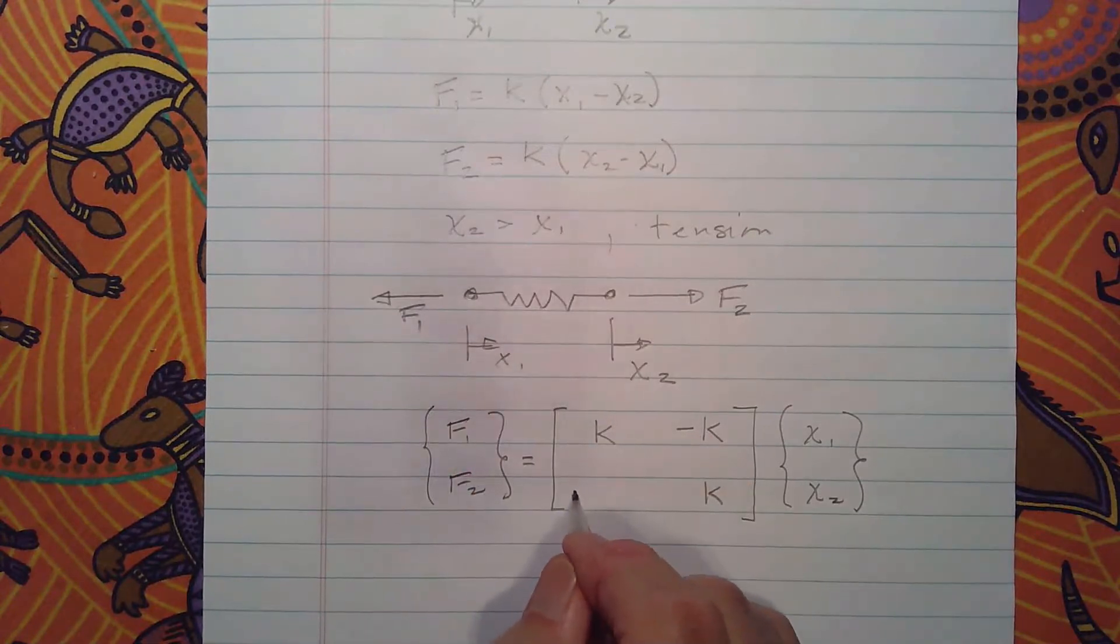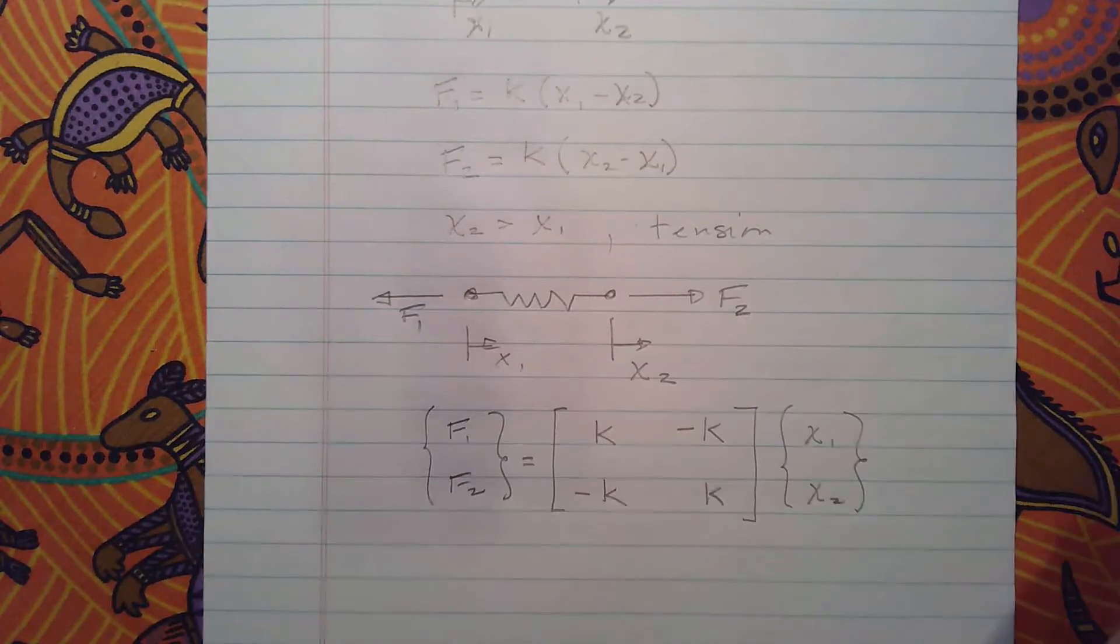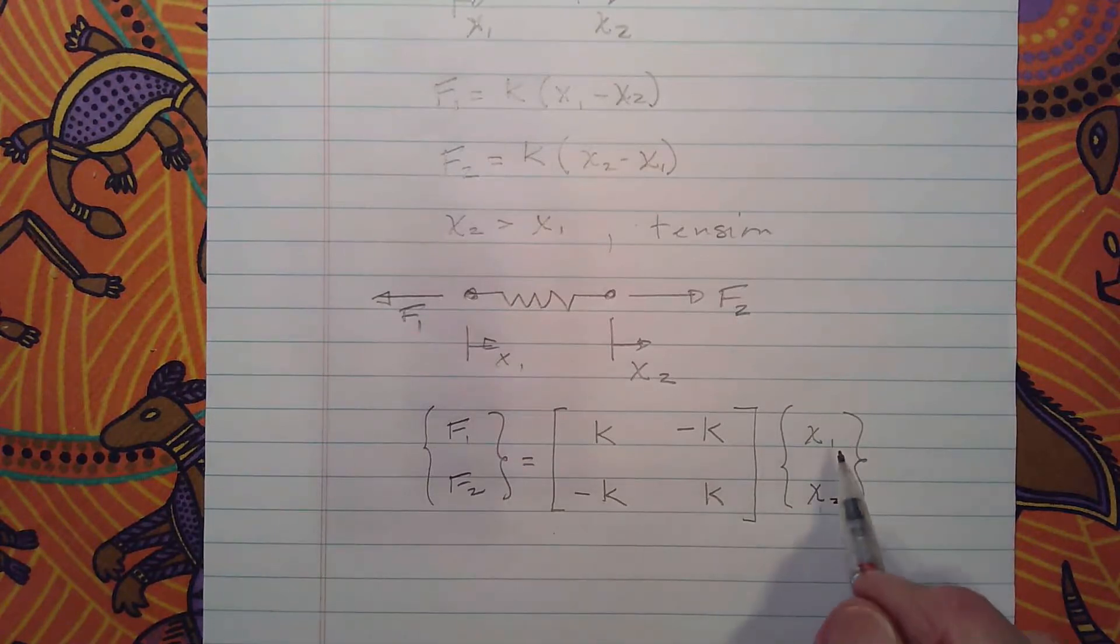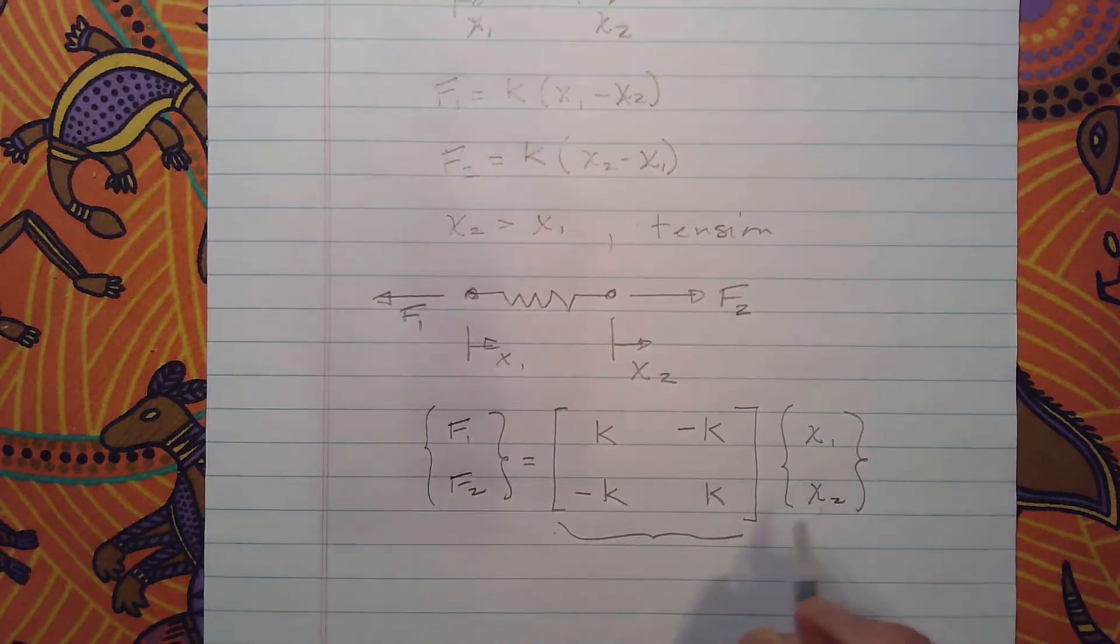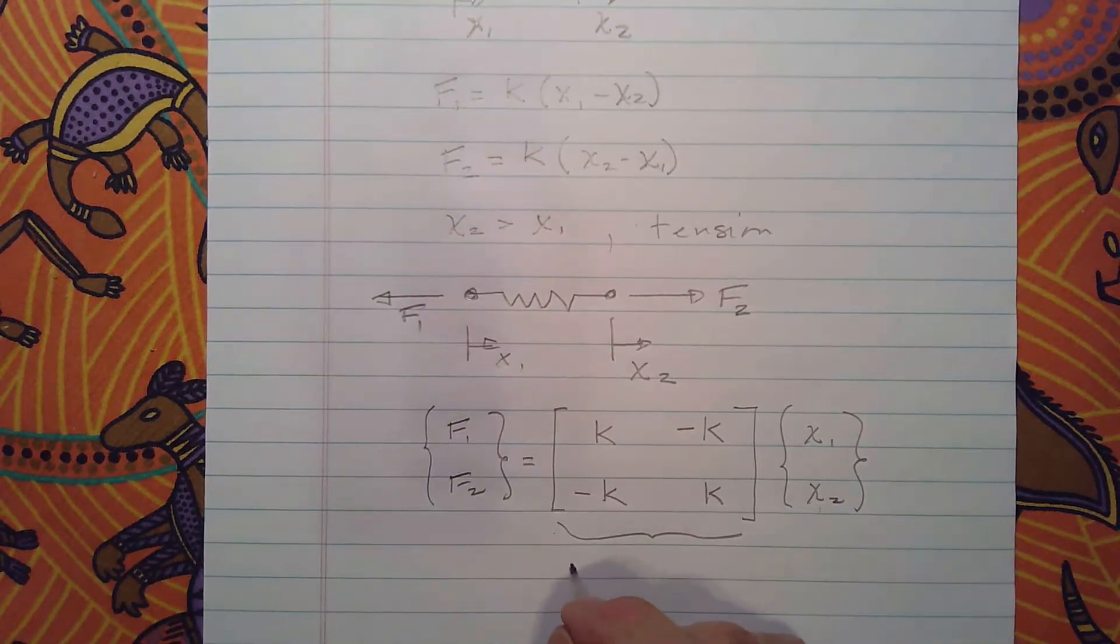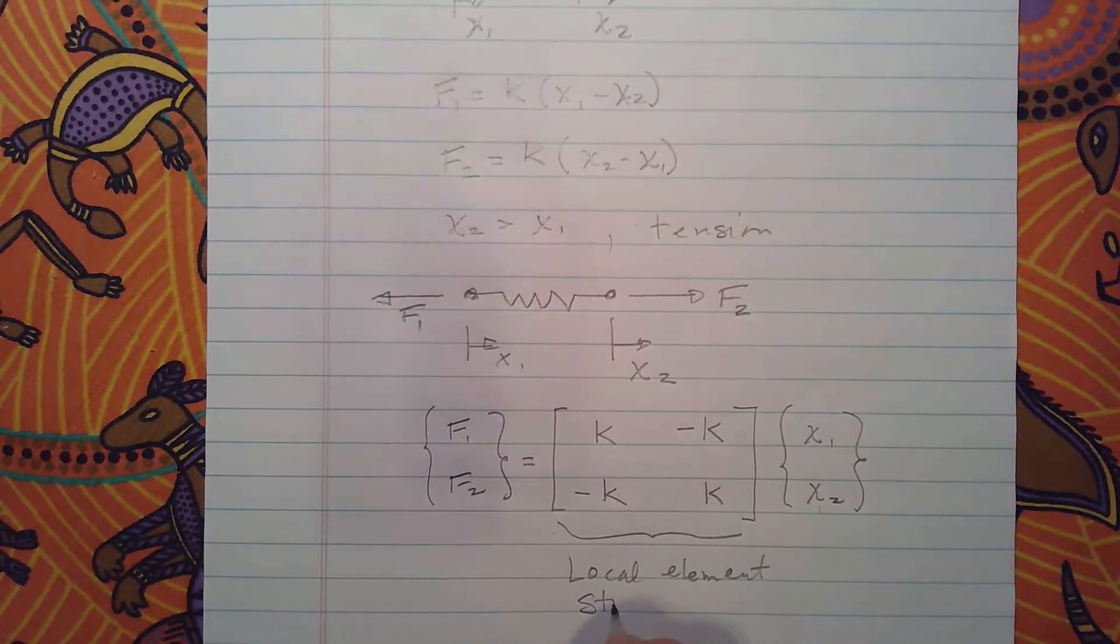So this is our element stiffness equation, with the forces over here on the left and the nodal displacements on the right—nodal forces on the left, nodal displacements on the right—and then this vector right here is our element stiffness matrix.